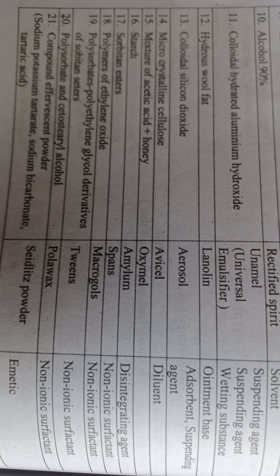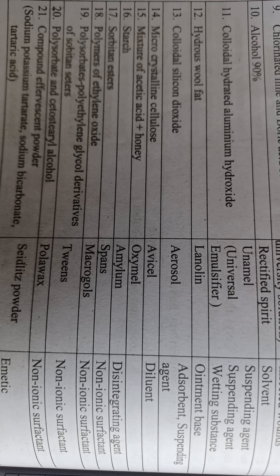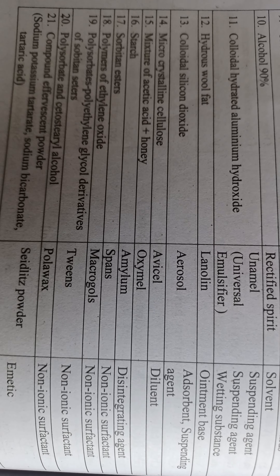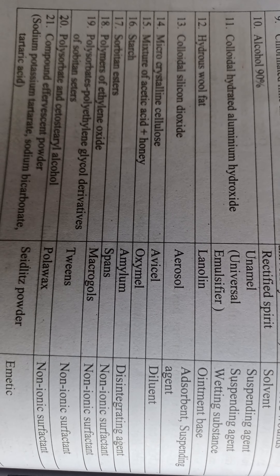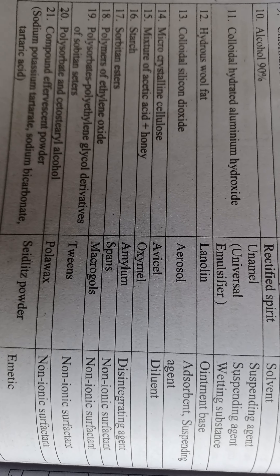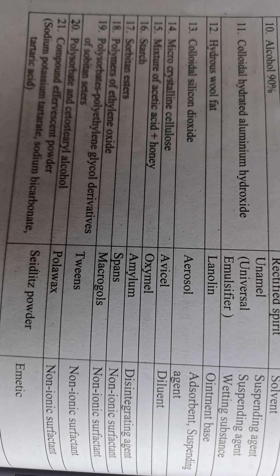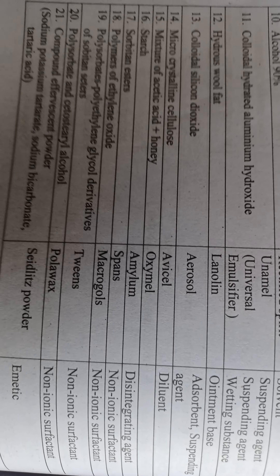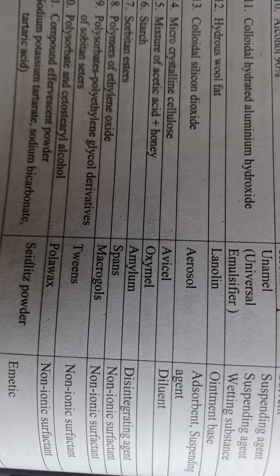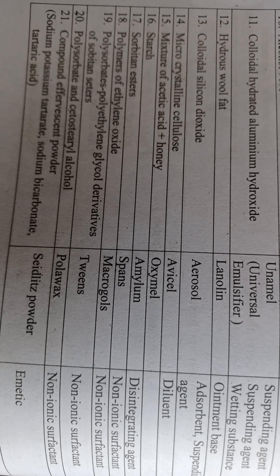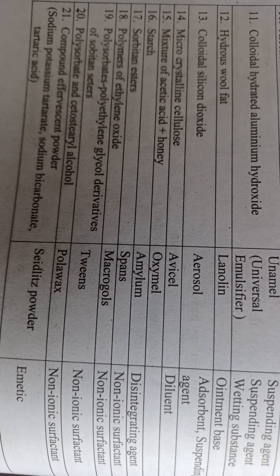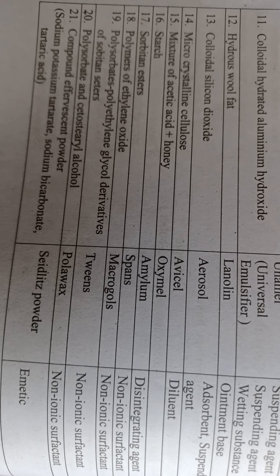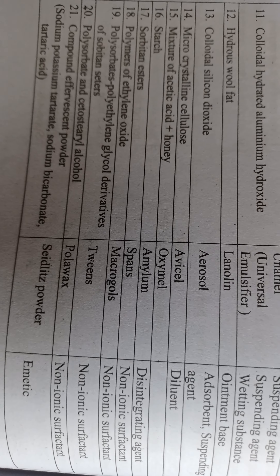Starch, amyla, is a disintegrating agent. Sorbitan esters, Spans, are non-ionic surfactants. Polymers of ethylene oxide, macrogols, are non-ionic surfactants. Polysorbates, polyethylene glycol derivatives of sorbitan, are non-ionic surfactants. Polysorbate and cetostearyl alcohol, Polawax, is a non-ionic surfactant. Compound effervescent powder, Seidlitz powder, is an emetic.